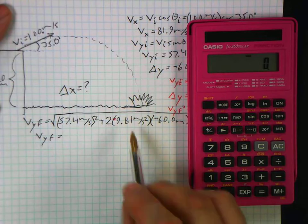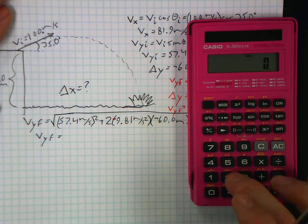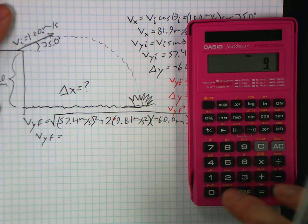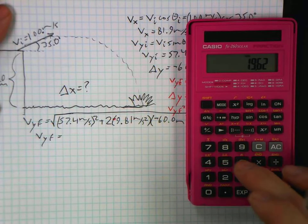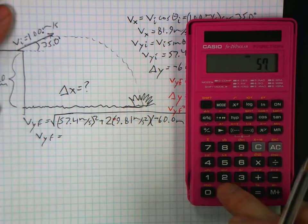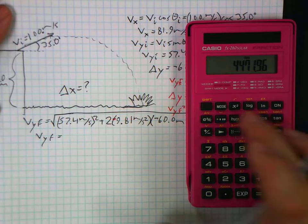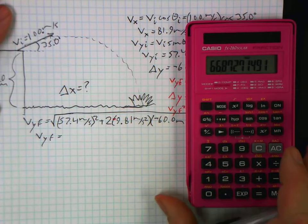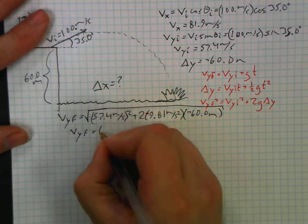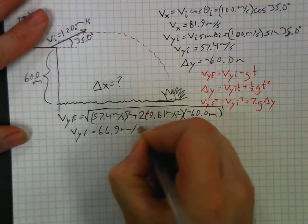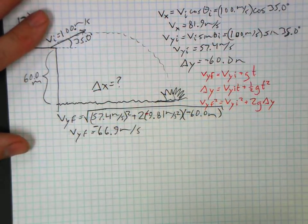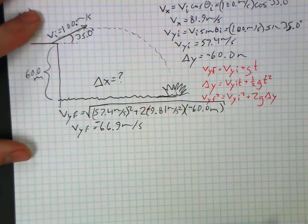I always start with the more complicated statement first. Two times—I'm going to drop my negatives because they're going to cancel—9.81 times 60 plus 57.4 squared equals, then I get my square root, 66.9 meters per second in the y direction or downward, so it should be a negative.